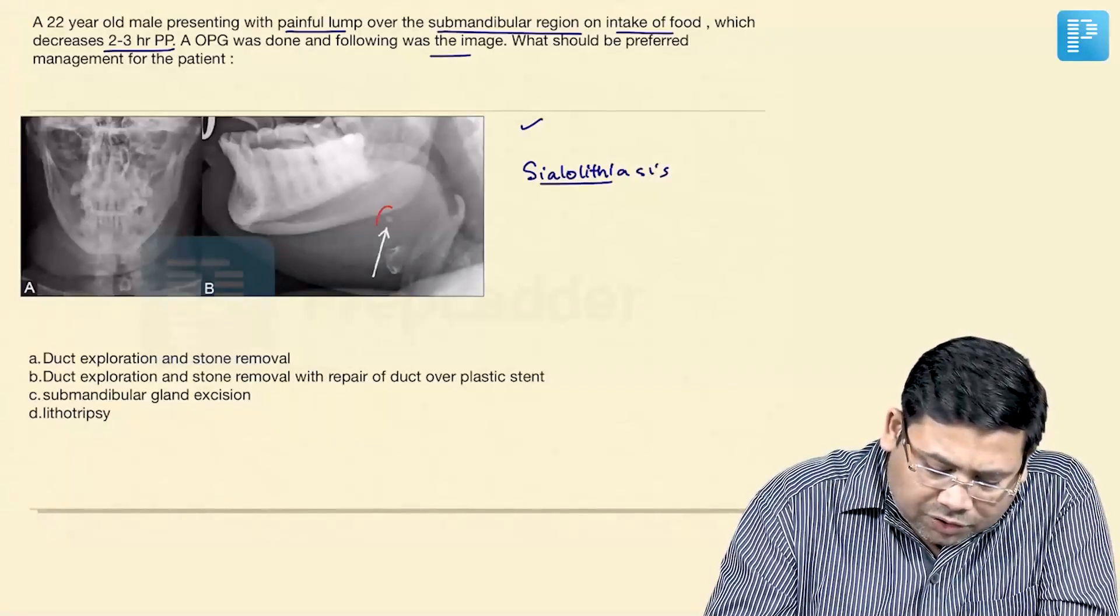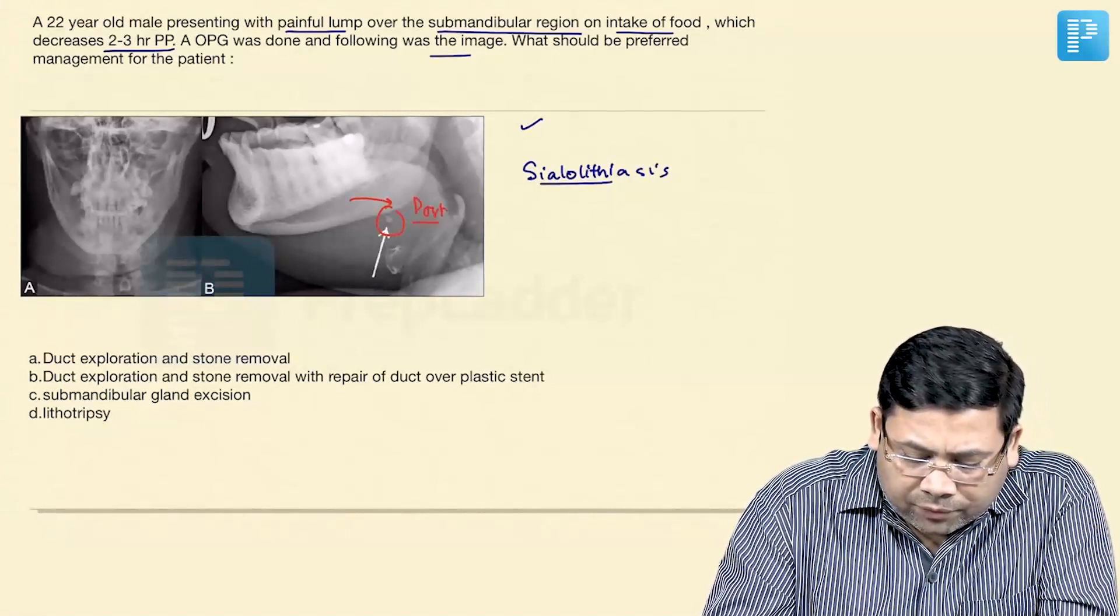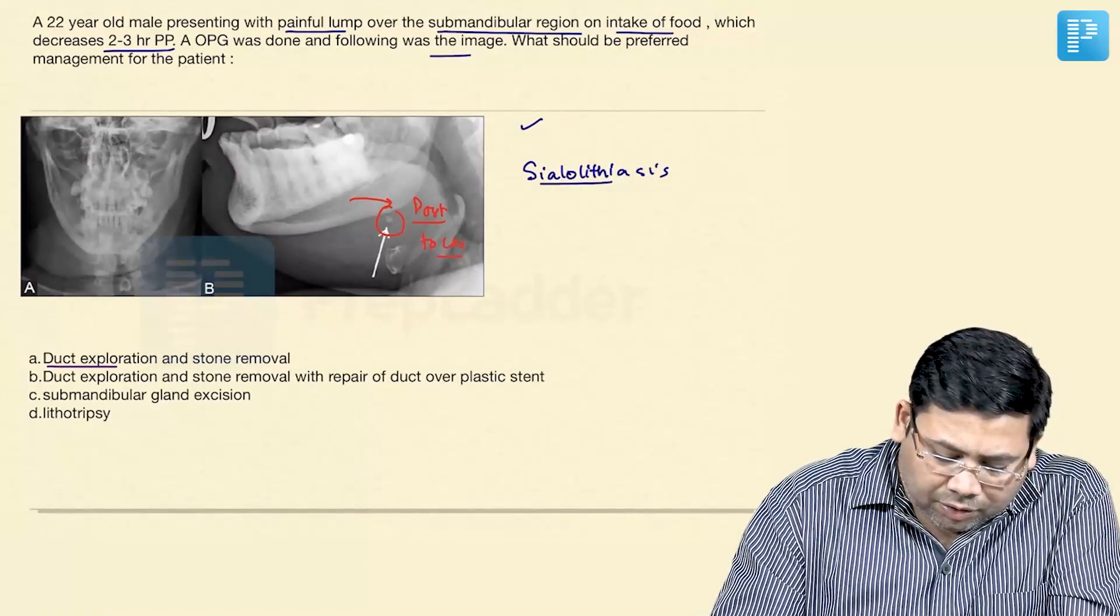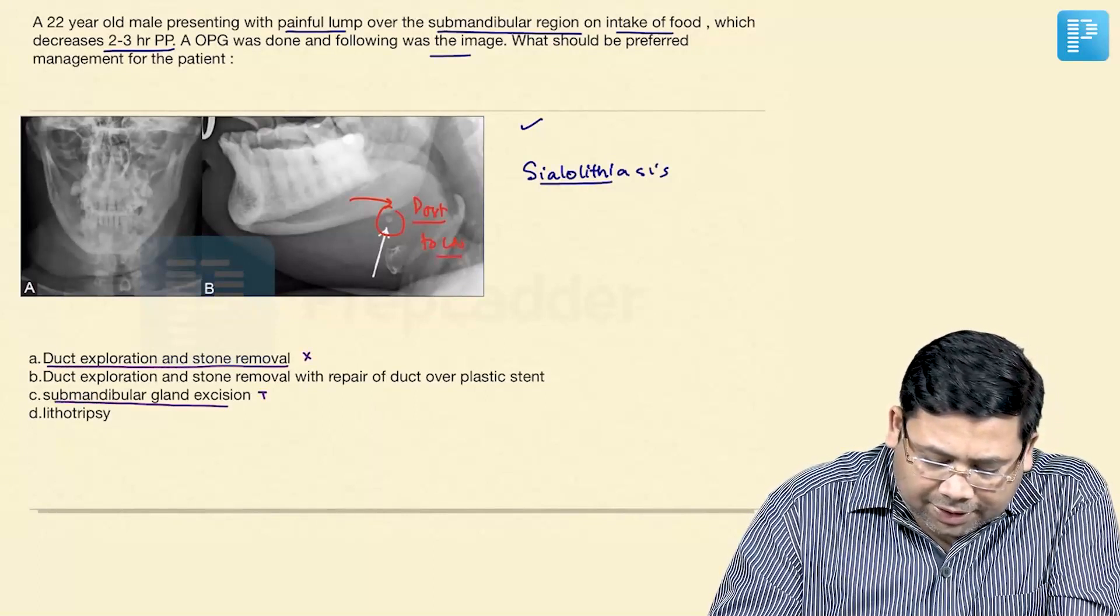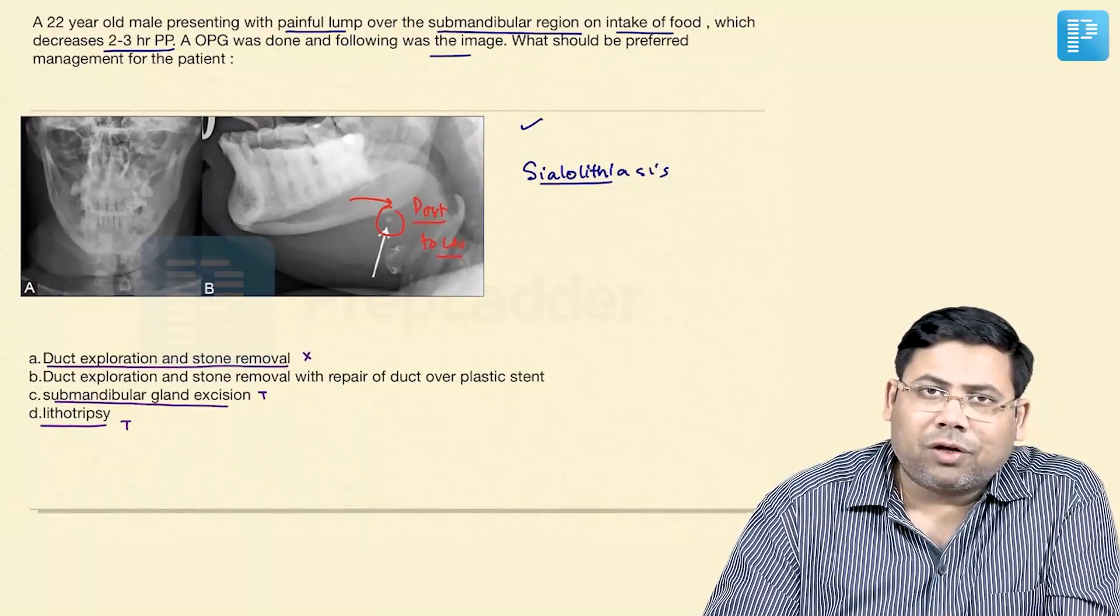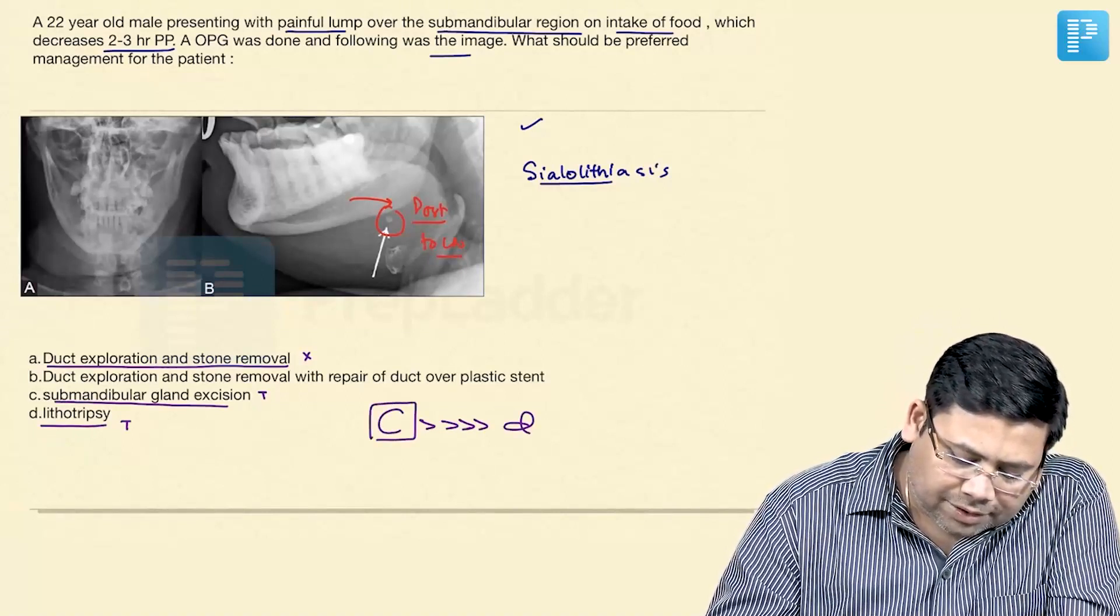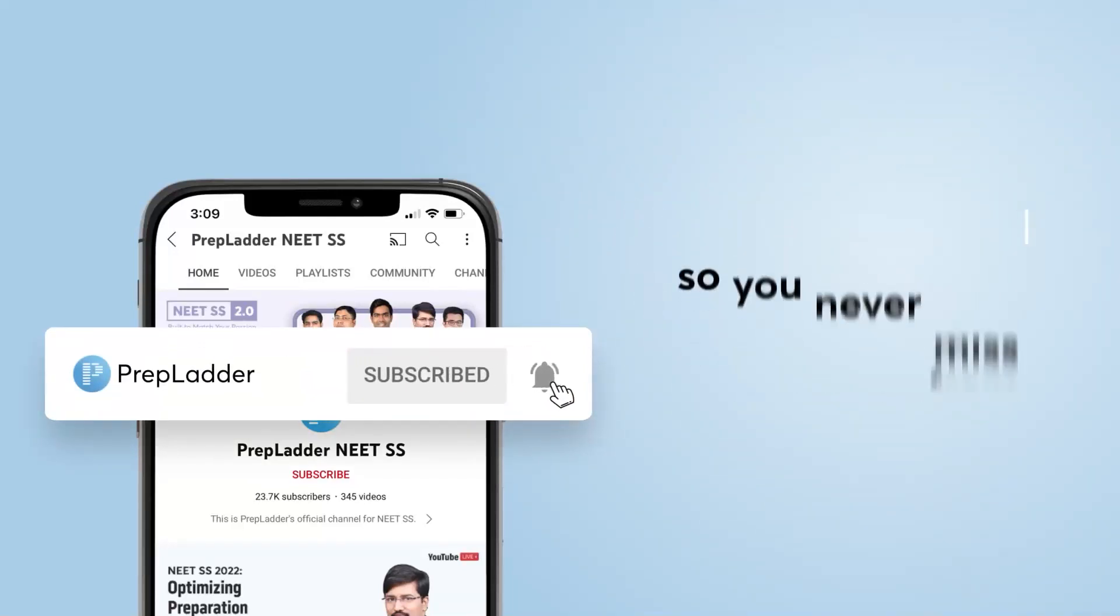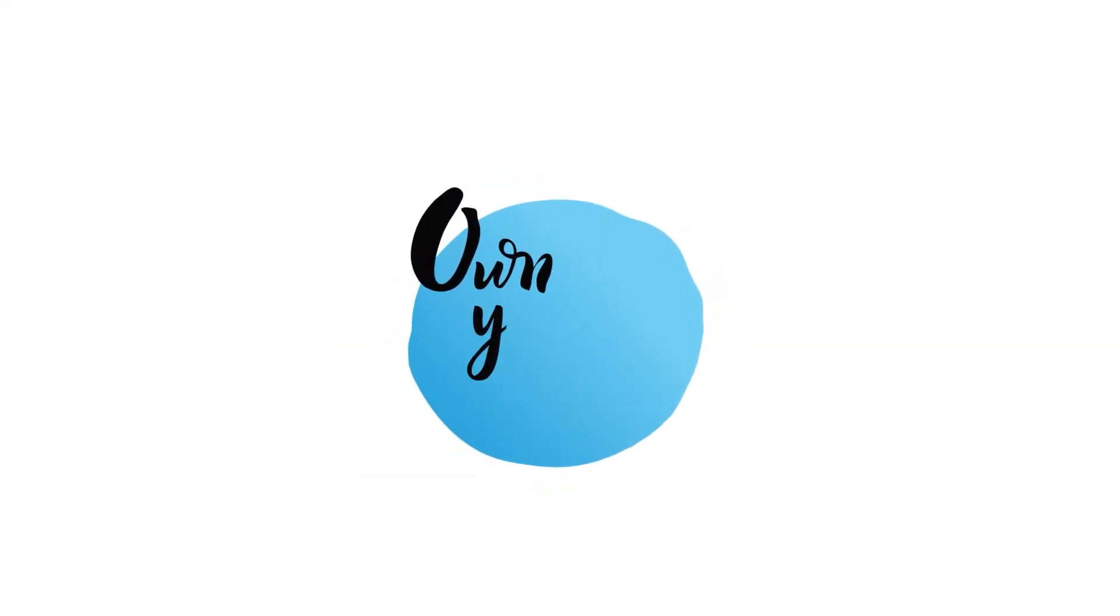In this case, if you see the stone, where is it? It is quite behind, posterior to the lingual nerve. Since it is posterior to lingual nerve, the best management here - can we go for duct exploration plus stone removal? No. Submandibular gland excision? Yes. And remember, lithotripsy is also a yes. Nowadays we can even go for lithotripsy. But option C is far better than option D. Hence I will go for option C.